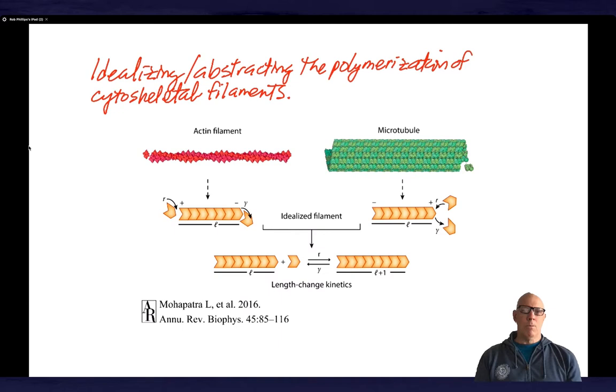So just by way of background, let me remind you that the cell, I'm thinking more so of the eukaryotic cell at the moment, although there are bacterial analogues, but the cell is spanned by a variety of different filamentous protein assemblies. You see here two of them, which are actin filaments and microtubules. The actin filaments are shown on the left. The microtubule is a hollow cylinder, shown on the right.